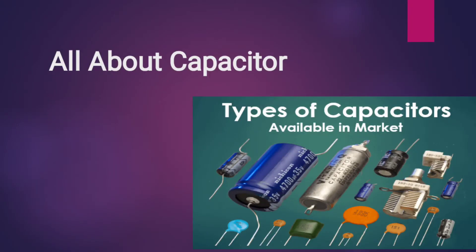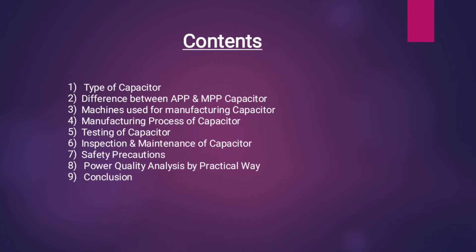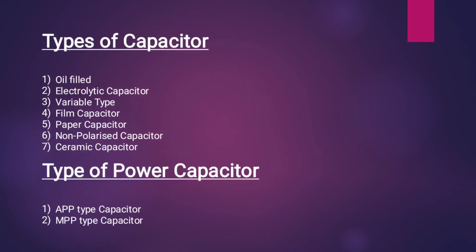This PPT is all about capacitors. The contents include: first, types of capacitors; second, difference between APP and MPP capacitors; third, machines used for manufacturing capacitors; fourth, manufacturing process of capacitors; fifth, testing of capacitors; sixth, inspection and maintenance; seventh, safety precautions; eighth, power quality analysis by practical way; and last, conclusion.